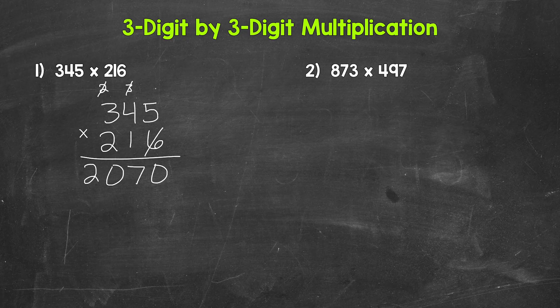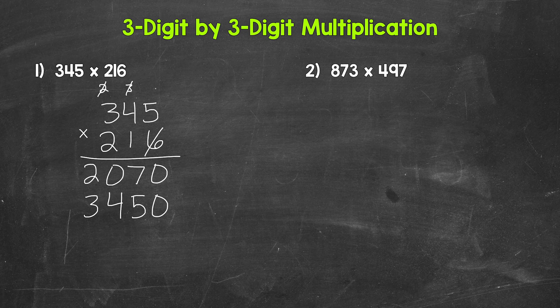Now we move over to the one in the tens place, which has a value of 10, so we need a zero right here. Now we multiply. We have one times five, which is five. One times four is four. And then one times three is three. We are done with this one.